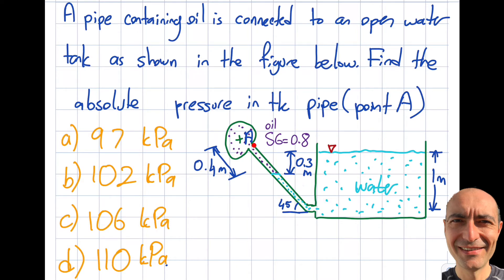It is asking me what is the absolute pressure in this pipe. By the way, the pipe is in and out of the screen. I have the pipe that has oil in it, and this is water as I mentioned. This is open to atmosphere as you can see, and the dimensions are given and the choices are right over here.